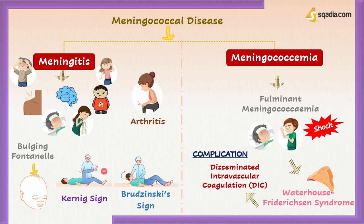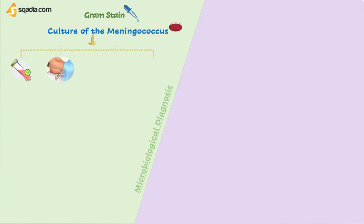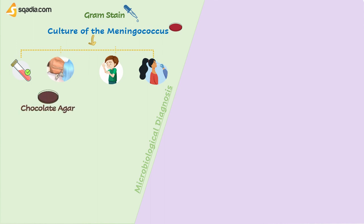Septic or reactive arthritis may also develop as a result of meningitis. Microbiological diagnosis involves gram stain and culture of meningococcus from blood, cerebrospinal fluid, petechial scrapings, or nasopharyngeal swabs. Neisseria grows best on blood agar that has been heated so the agar turns brown, called chocolate agar.